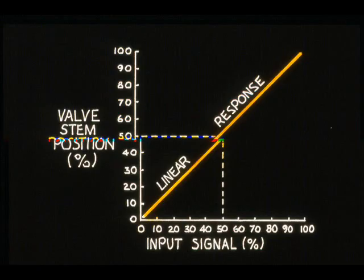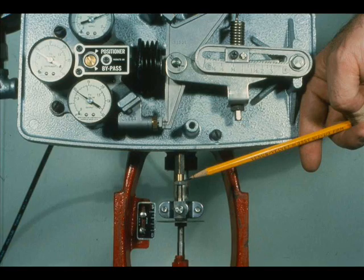For any input within the range of a control valve, there is a resulting stem position. Ideally, the relationship between input and stem position should be linear, and the valve stem should be positioned within three to four thousandths of an inch for the corresponding input.